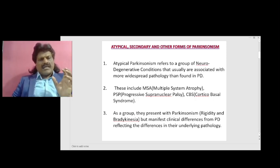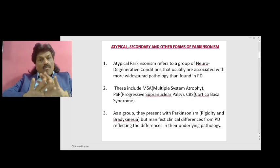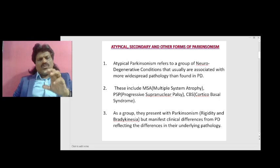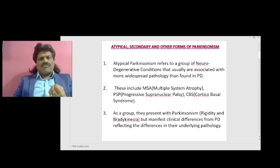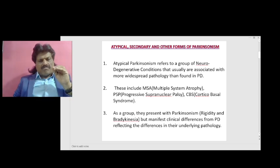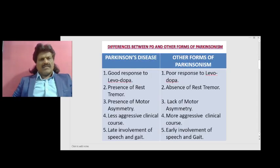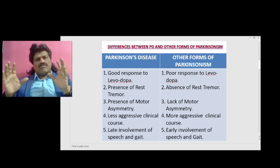Atypical parkinsonism refers to a group of neurodegenerative conditions that are usually associated with more widespread pathology than found in Parkinson's disease, so they have more widespread clinical features also. These include multiple system atrophy, progressive supranuclear palsy, and corticobasal syndrome. As a group, they present with parkinsonism — that is, rigidity and bradykinesia — but manifest clinical differences from Parkinson's disease, reflecting the differences in their underlying pathology.